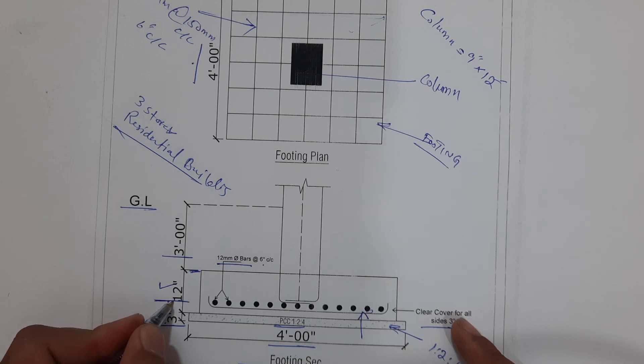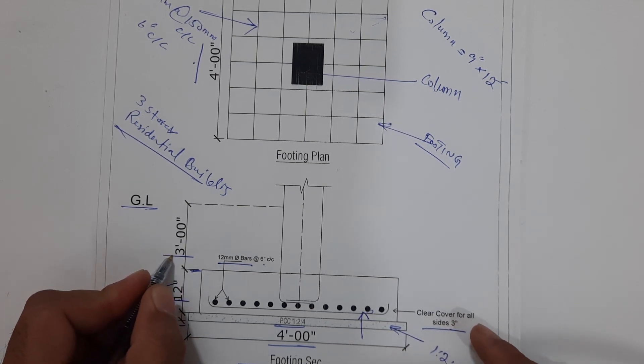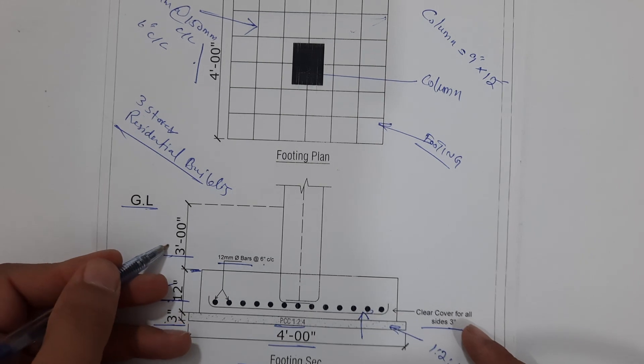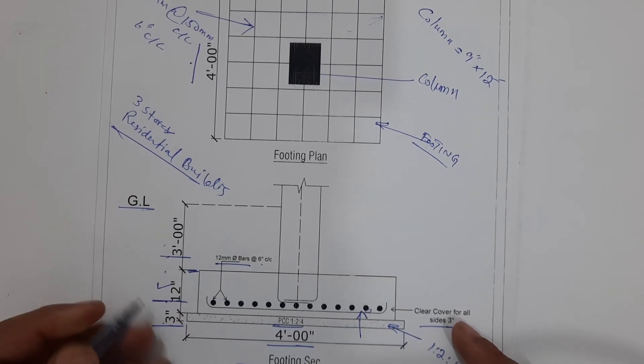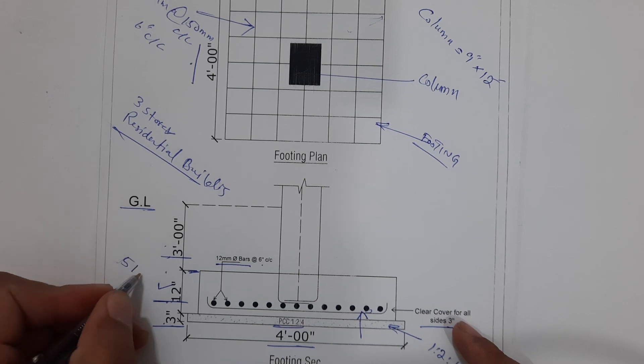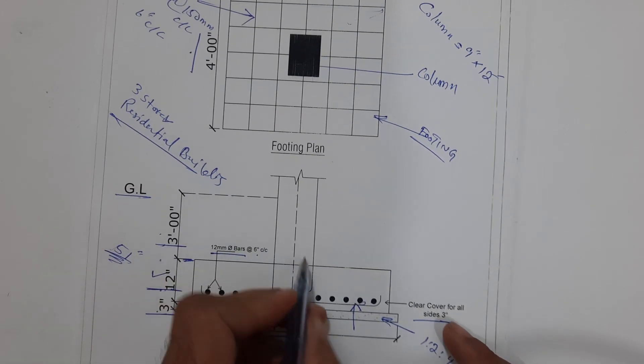So this is 15 inches plus 3 feet. This is going about 36 inches, so this is about 51 inches. Total depth of this footing is 51 inches. You can see this is RCC column which size is 9 by 12 inches.